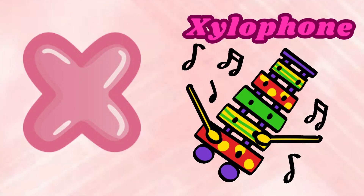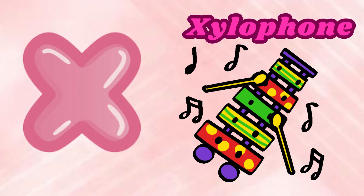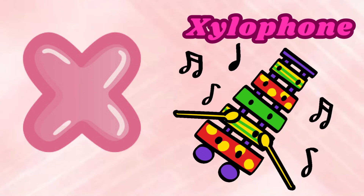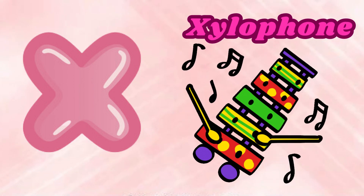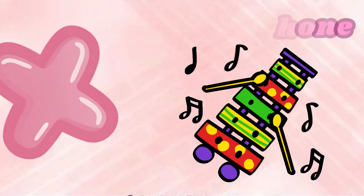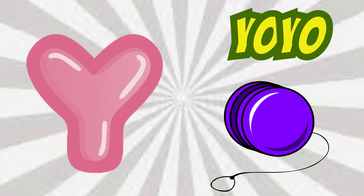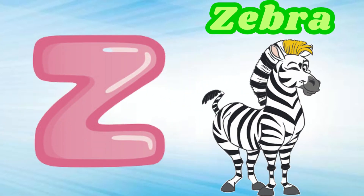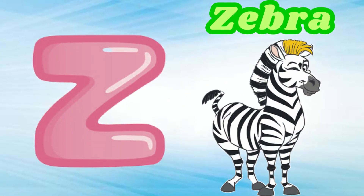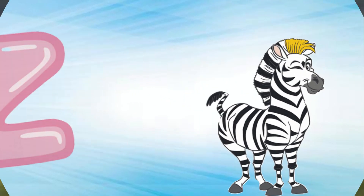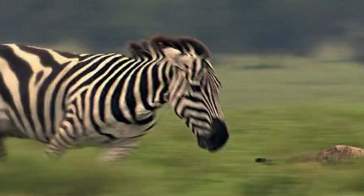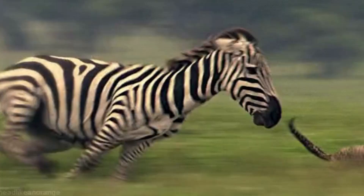X is for xylophone. X, z, xylophone, X. Y is for yo-yo. Y, y, yo-yo, Y. Z is for zebra. Z, z, zebra, Z.